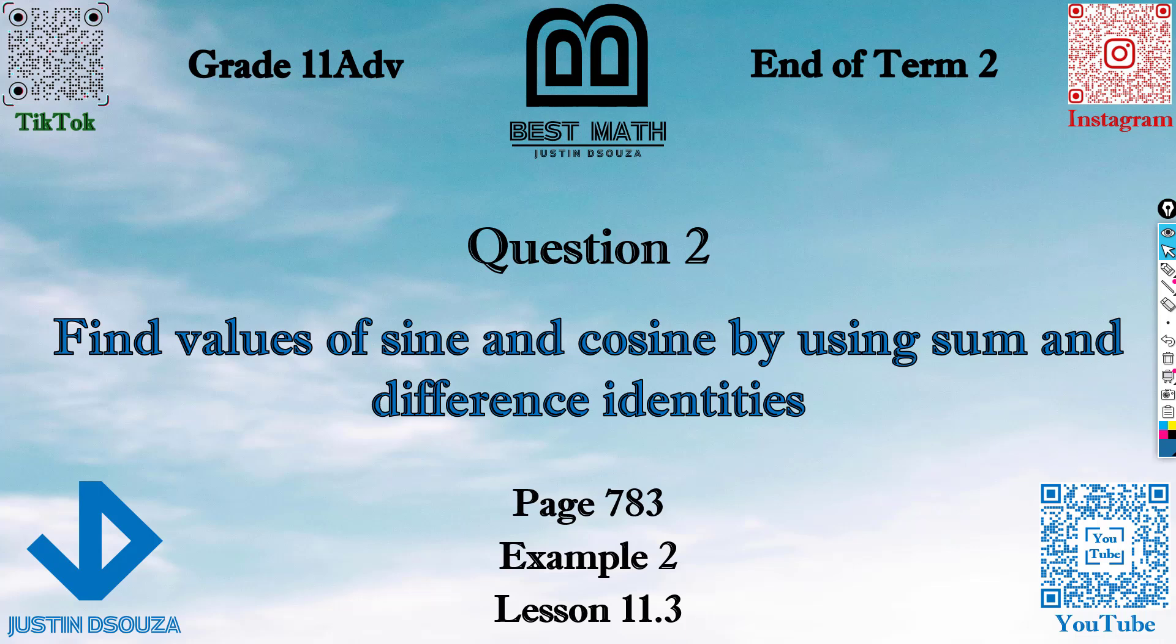Question 2 is to use the sum and difference identities of sine and cosine, but since it's an electronic part, we did not need to do that. We can use any method. And this is from lesson 11.3.